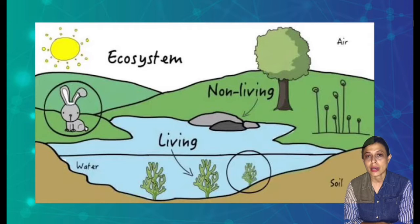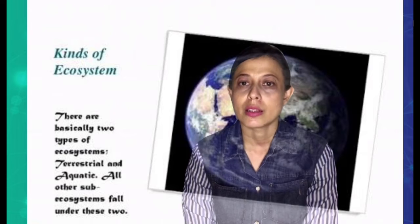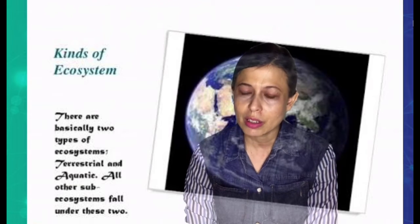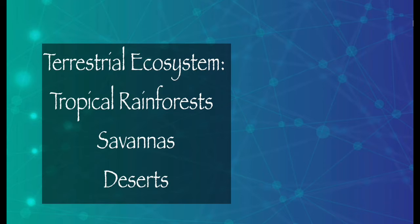Living things and non-living things need each other to survive. There are two big groups of ecosystem: the terrestrial and aquatic. Terrestrial ecosystem is the ecosystem that happens in the land. Several examples of terrestrial ecosystems are tropical rainforests, savannahs, and deserts.